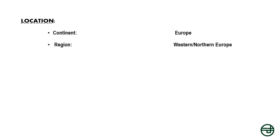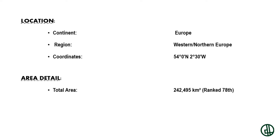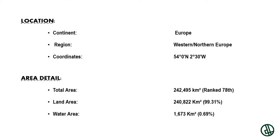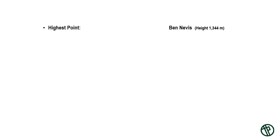Location: Continent Europe, Region Western or Northern Europe, Coordinates 54 degrees north, 2 degrees 30 minutes west. Area detail: Total area 242,495 km², ranked 78th. Land area 240,822 km², which is 99.31% of total area. Water area 1,673 km², 0.69% of total area. Highest point is Ben Nevis at a height of 1,344 m.